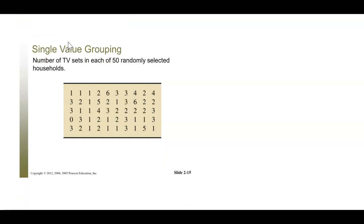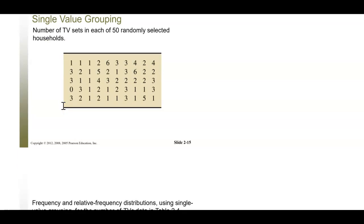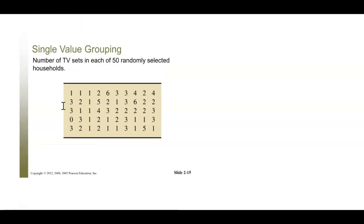Single value grouping looks a lot like qualitative data because there are only so many categories. In this example, we have the number of TV sets in each of 50 randomly selected households. You can only have so many TVs — zero, one, two, three, four, five, six. It does not appear that anyone in this group had more than six TVs. It's called single value grouping because there are so few single values that each can be its own category in our frequency table.